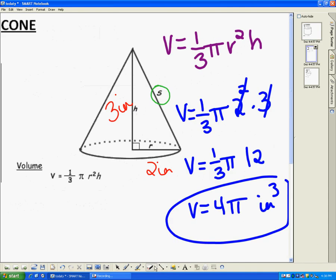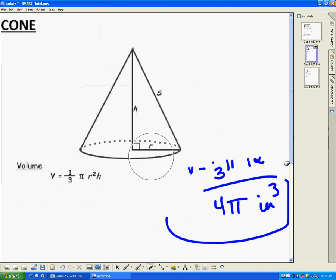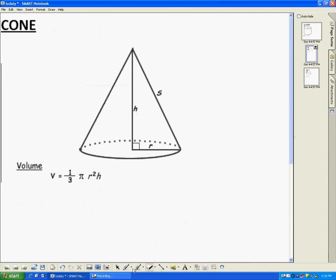Now, cone. The formula for the volume of a cone is 1 third of pi r squared h. Again, r represents the radius, and h is the height from the center of the cone to the top. The s represents the slant height, and we don't need slant height when we're finding volume. If you're given the slant height, you don't need it. That's just extra information.